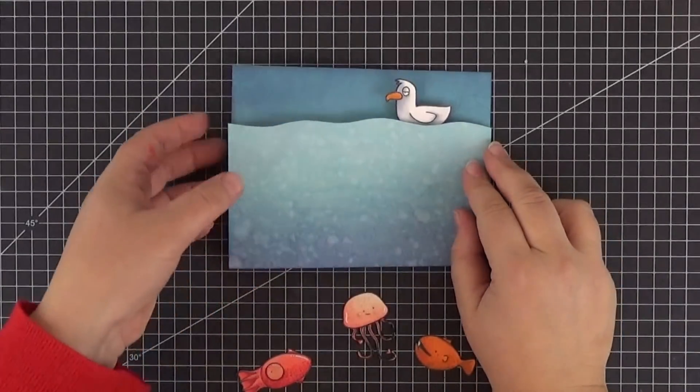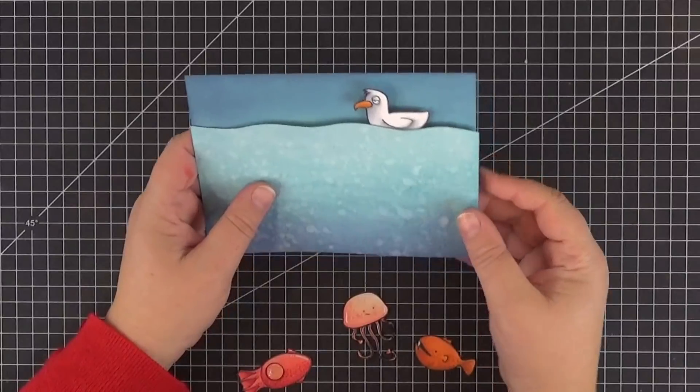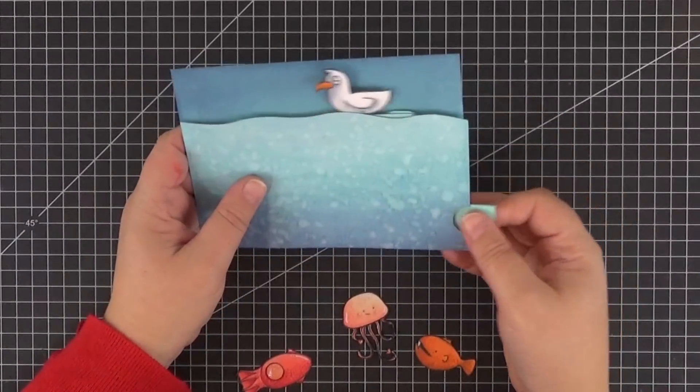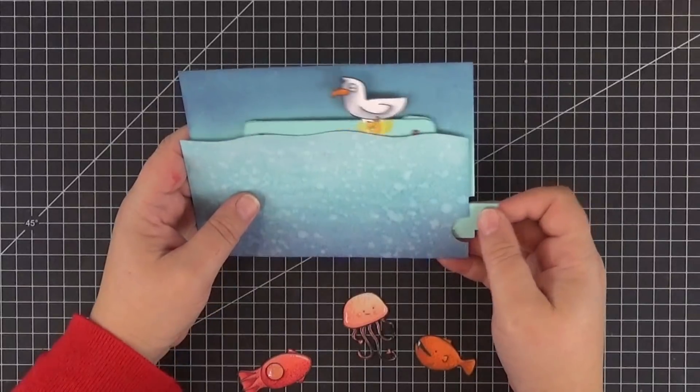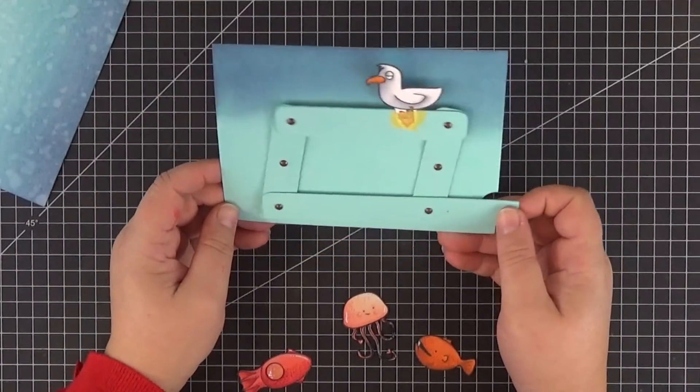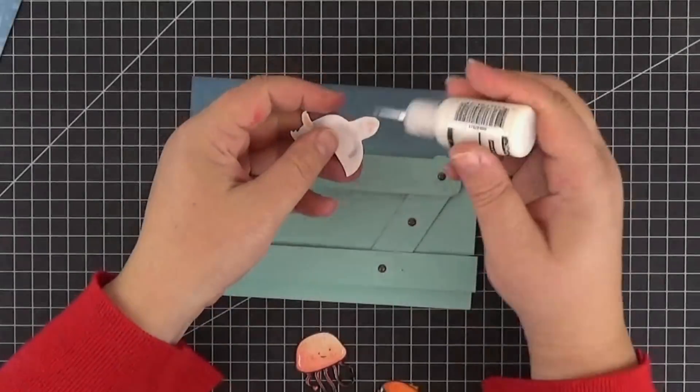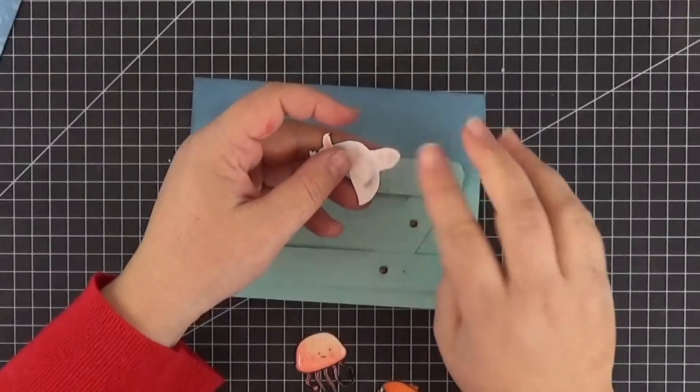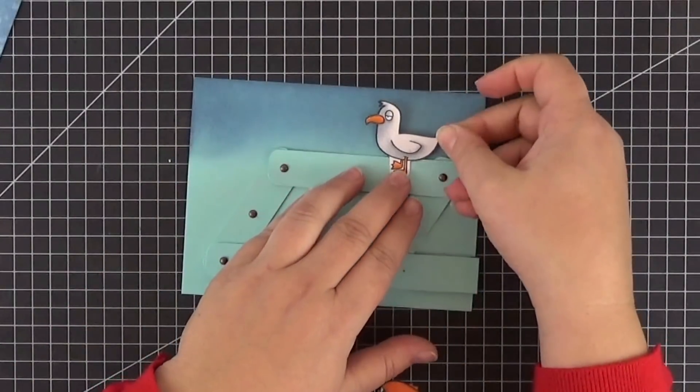I started with the seagull, which I temporarily attached with a strip of tape. And now I'm making sure that it can be seen the whole way before I glue it to the upper horizontal bar of the mechanism. I used Ranger's Matte Multi Medium for this, but you can use any glue or even double sided tape.